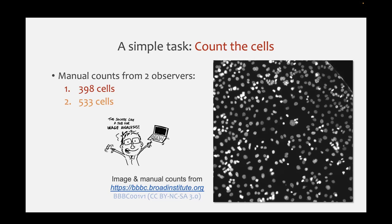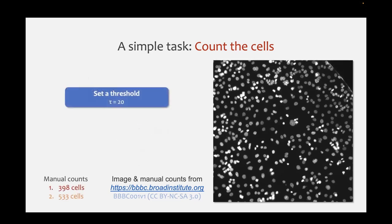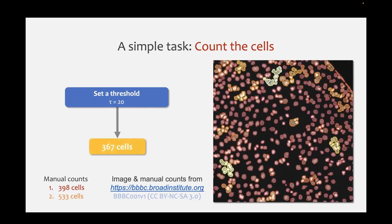This sounds like a job for image analysis - we can do it objectively and really determine the number of cells. The nuclei have higher pixel values against a darker background, so let's set a threshold. Setting a threshold gives us 367 cells, which looks pretty good for the first observer. We get our automatic cell counts really fast: set a threshold, cluster the right pixels together into distinct regions called objects, count them - and we get 367.